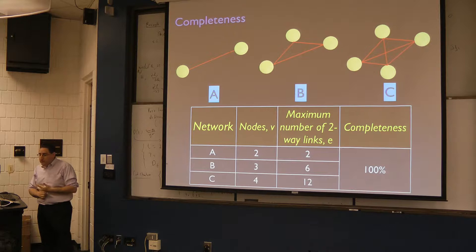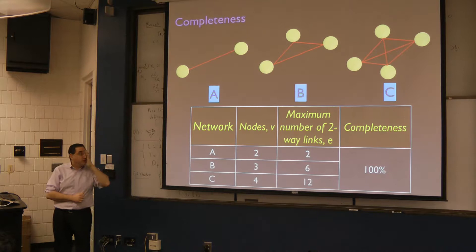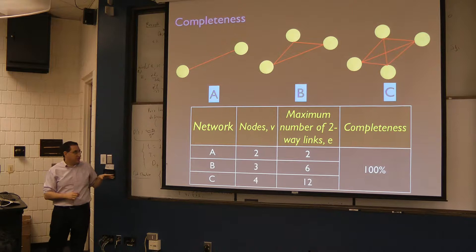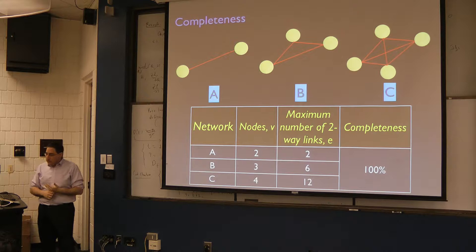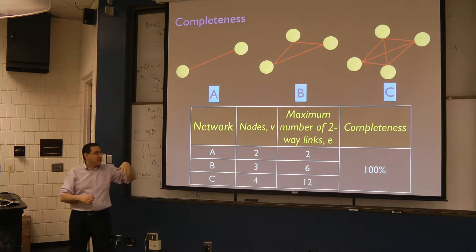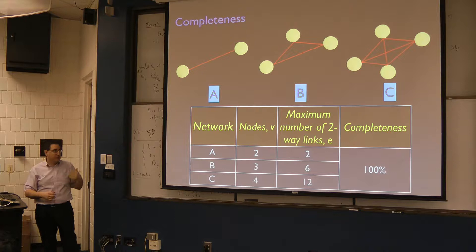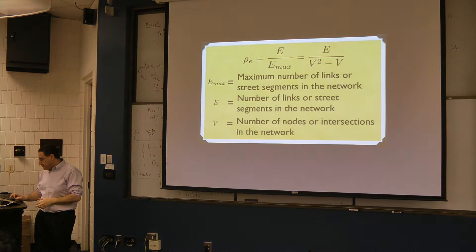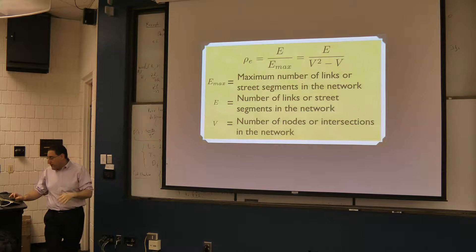We can look at the completeness of the network — how many nodes are directly connected to each other. This is correlated with scale but is an interesting metric with some relationship to metropolitan-level behavior. Completeness is the number of edges divided by the total number of possible edges, which is v-squared minus v. We can also look at the degree of the network — a degree-four node has four links coming into it. More degree-four nodes means a more connected network; more degree-one or degree-three nodes indicates a more cul-de-sac-like network.